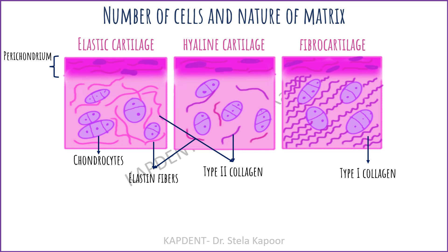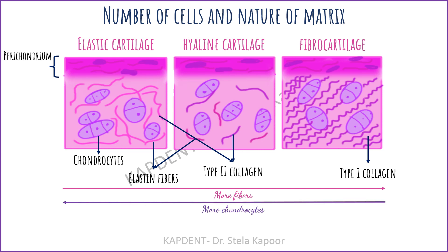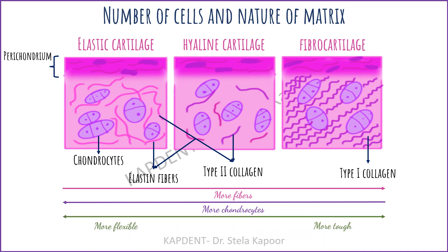On your screen is a simplified histological diagram. As we move from elastic to hyaline to fibrocartilage, the number and content of fibers increases. Moving in the opposite direction, the number of chondrocytes increases. Greater fiber content is related to the toughness of the cartilage, while lesser content makes it flexible.